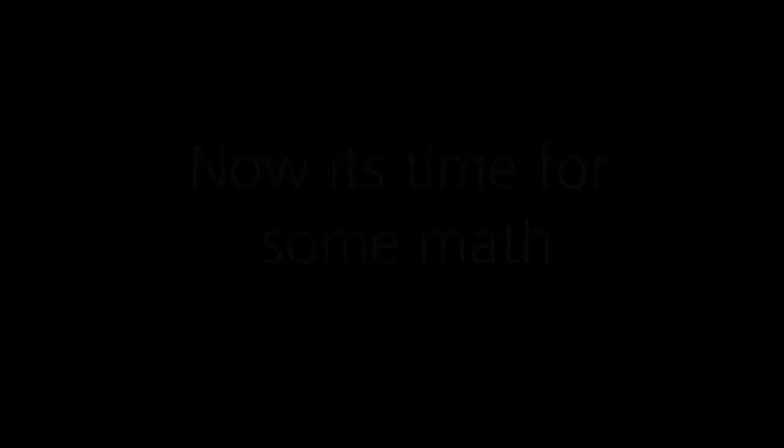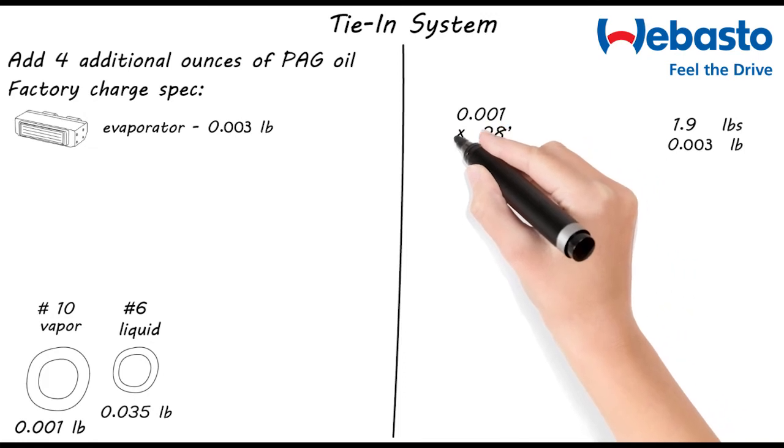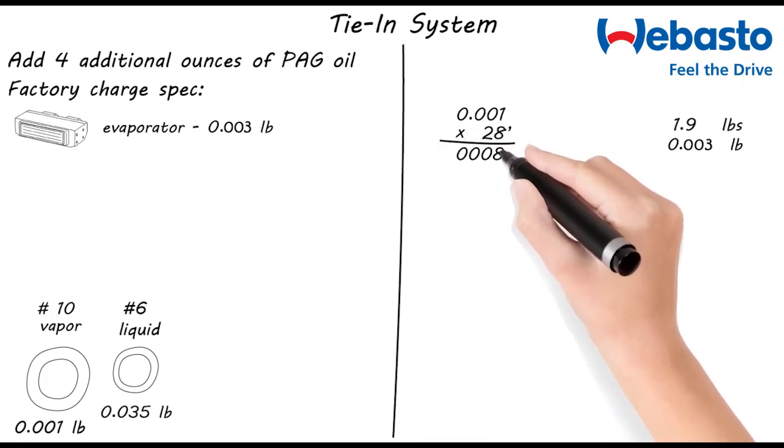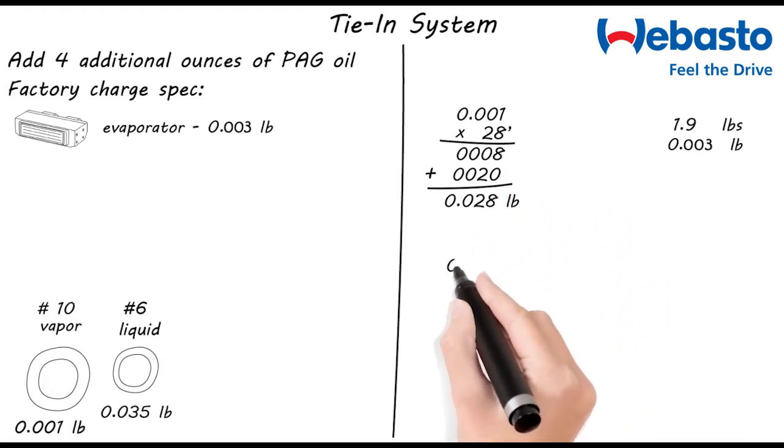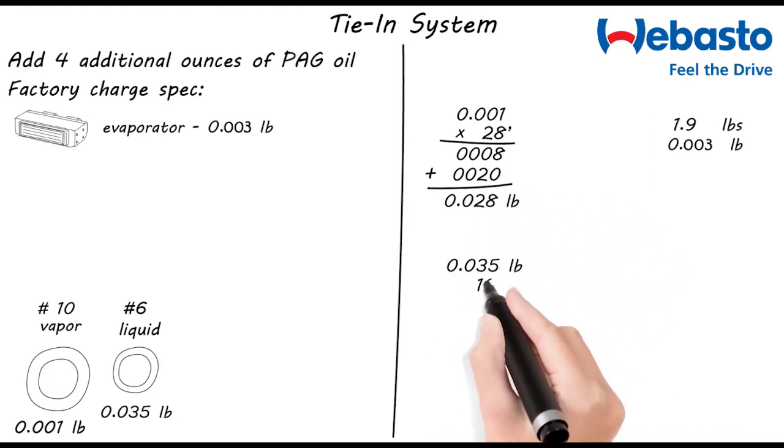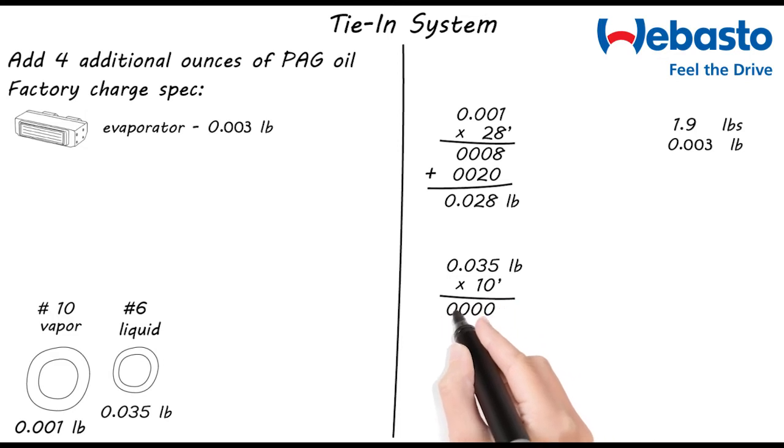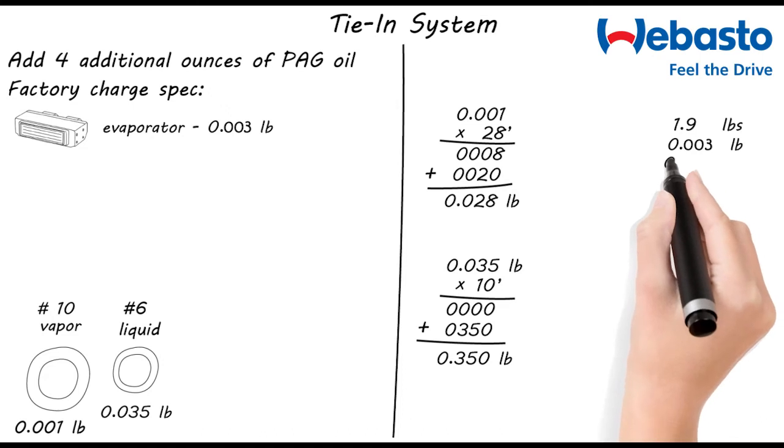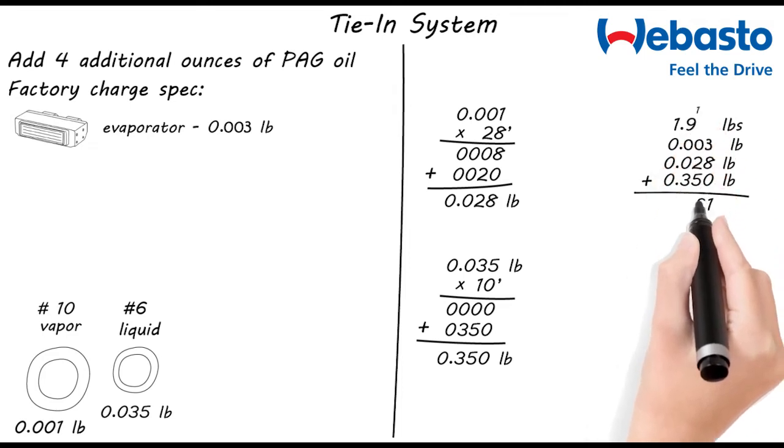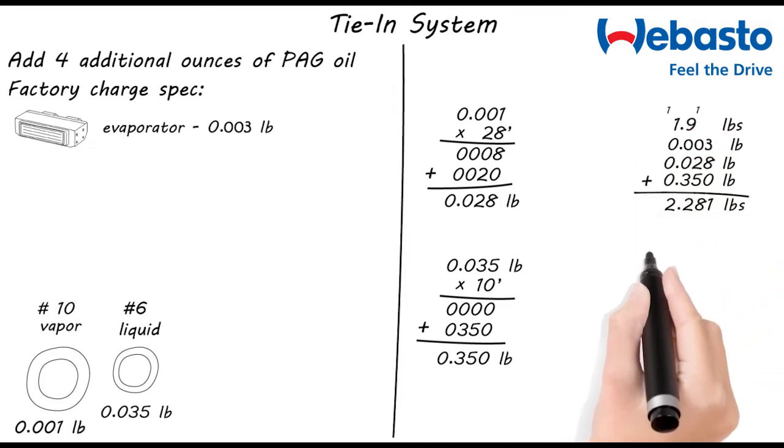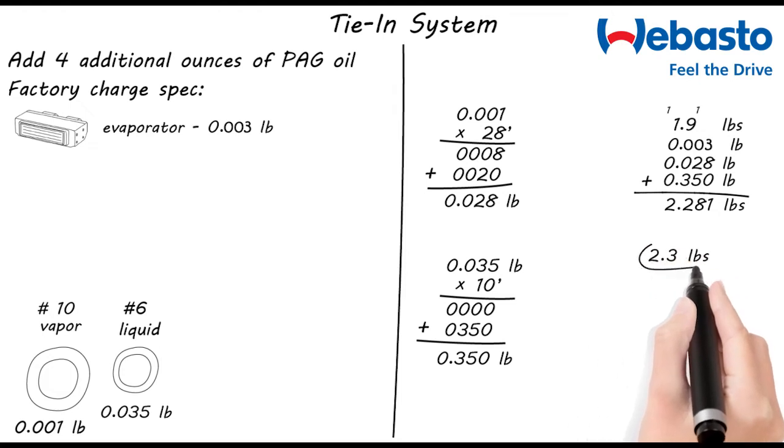Are you ready for some math? Now in our example, we had 28 feet of number 10 hose. So 28 multiplied by 0.001 gives us 0.028 pounds. We also have 10 feet of number 6 line in our installation. Multiplying that out gives us 0.35 pounds of refrigerant. So now we'll take those two values and put them over here and we'll add it all up to figure out our base charge amount. So the math gives us 2.281 pounds. So we'll just round it up to an even 2.3 pounds.